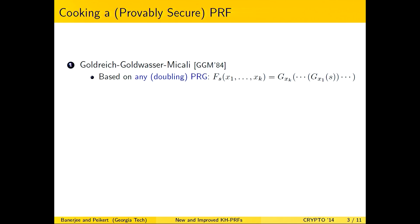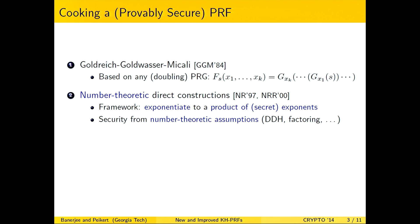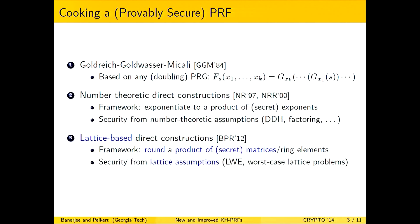Maybe we can do better with regards to efficiency if we had a direct construction. Two such constructions exist: the first is broadly in the framework of number-theoretic constructions, where the idea is to take a product of group exponents and raise the group generator to that power, with security from Decision Diffie-Hellman, factoring, and so on. Then there are lattice-based constructions where you take a product of matrix or ring elements and instead of exponentiation you round, with security from lattice assumptions like Learning With Errors.